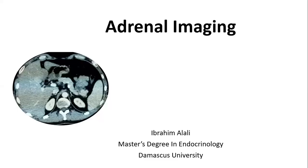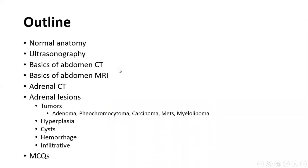Today I'm continuing my series about endocrine imaging — this is the third lecture. We will talk about adrenal imaging, covering normal anatomy, ultrasonography basics, abdominal CT and MRI basics, adrenal lesions on CT and MRI, tumors including adenomas, pheochromocytoma, carcinoma, metastasis, myelolipoma, hyperplasia, adrenal cysts, hemorrhage, and infiltrative disease. Finally, we will take some multiple choice questions.